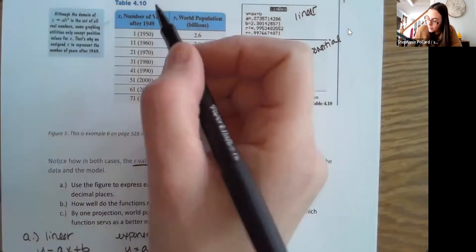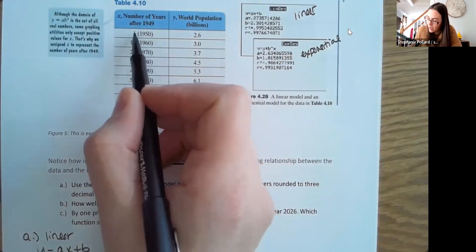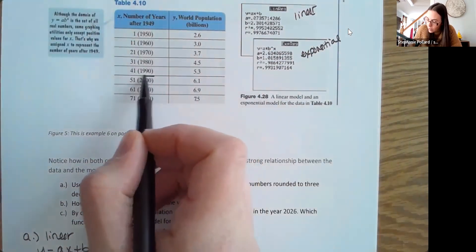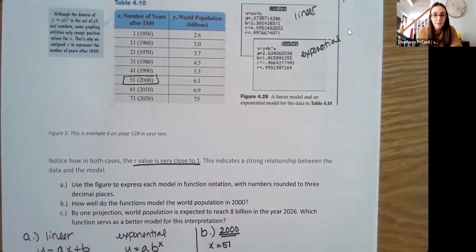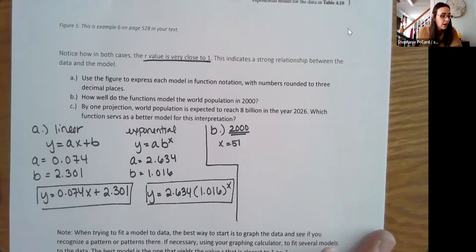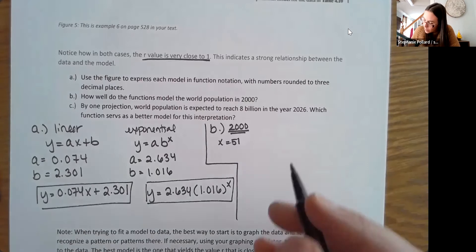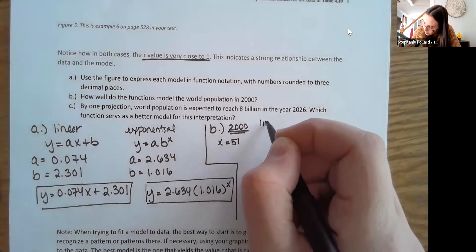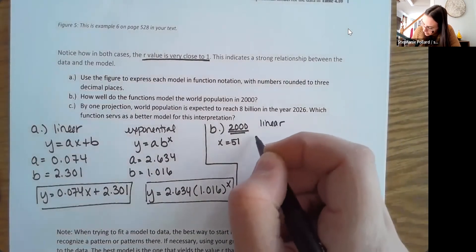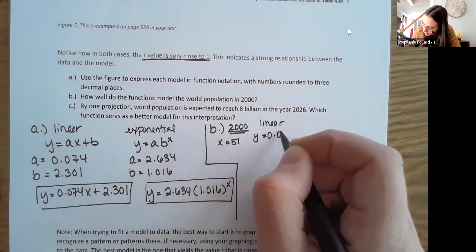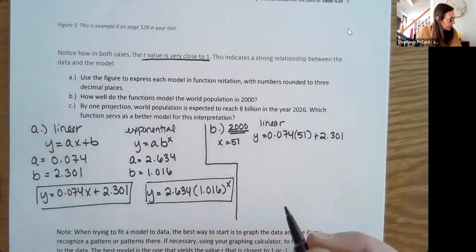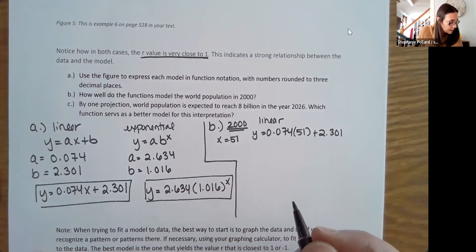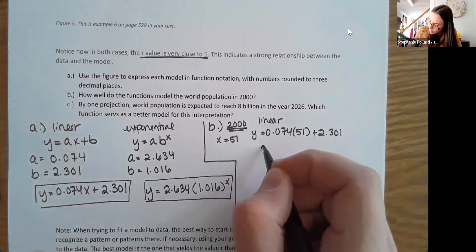Now we started in 1950, or 1949, excuse me. So 1950 was one year after. So 2000 is 51 years. So we're looking at a time here of 51 years that have passed. So X is going to be 51 in this case. And what I'm going to do is I'm going to plug this into both equations. So for my linear, I get that Y equals 0.074 times 51 plus 2.301. And I'm going to use my calculator, and let's see if I get there about 6.1.